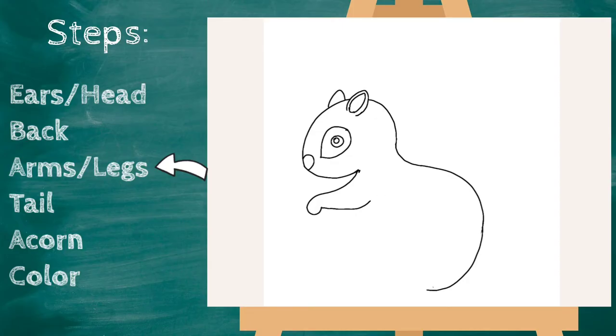Okay, our next step is to draw his back legs, and to do that we're gonna start about in the middle of his body and you're gonna make a big C shape. And then his feet will come out like this and connect to the bottom of his body.